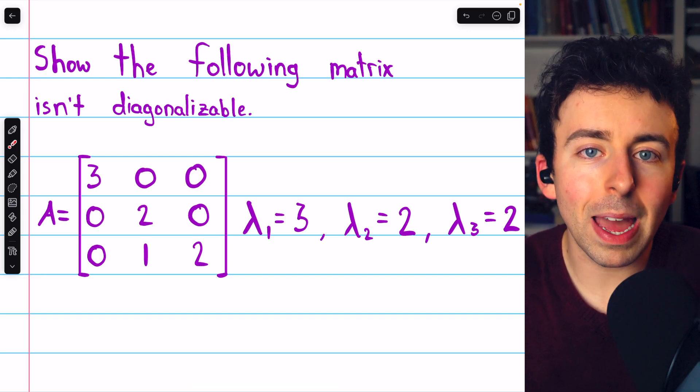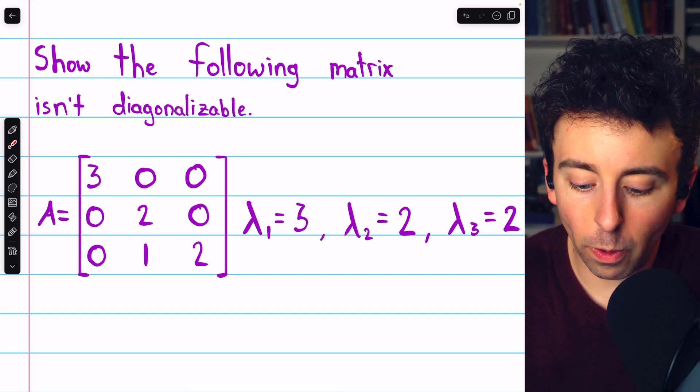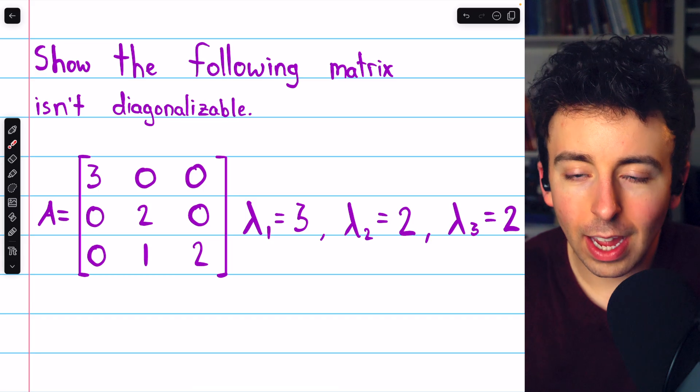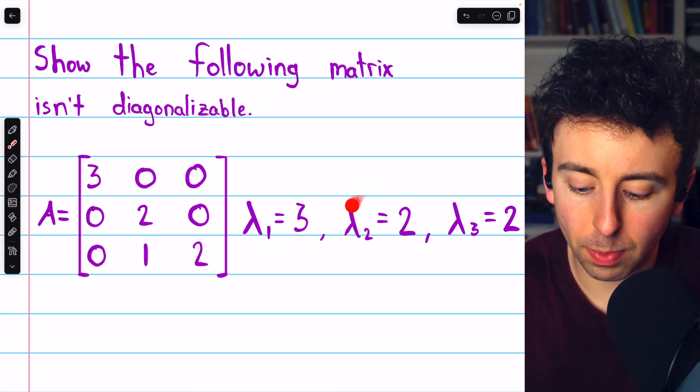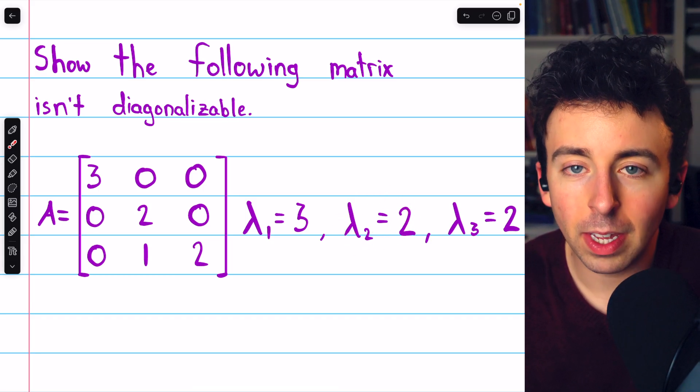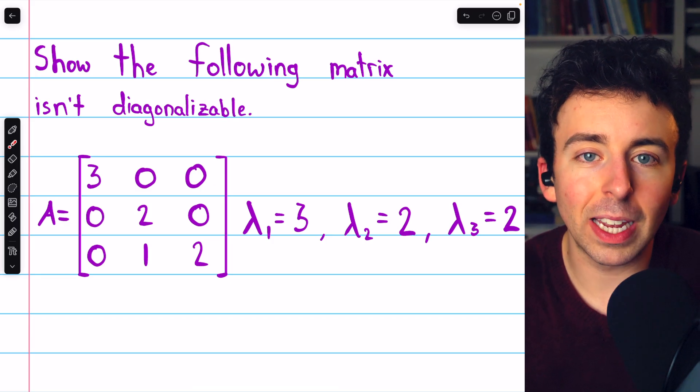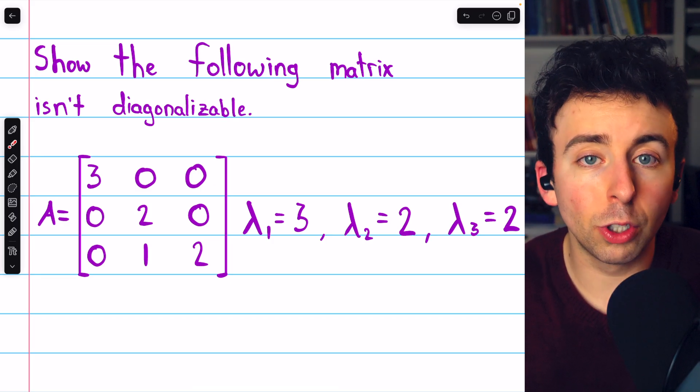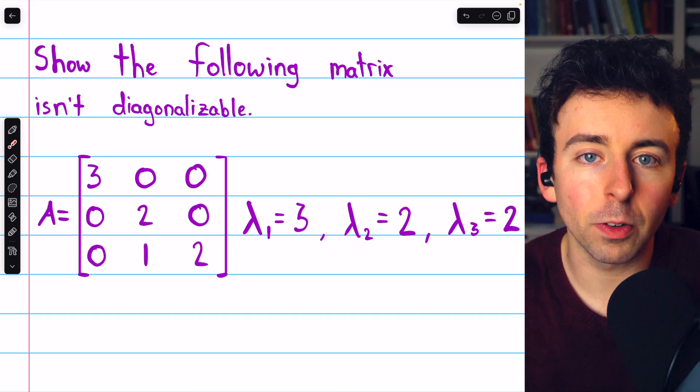So we have to find the dimension of the eigenspace corresponding to this eigenvalue and the dimension of the eigenspace corresponding to this eigenvalue. It's going to turn out that each eigenspace has a dimension of 1 and so there are only two linearly independent eigenvectors.